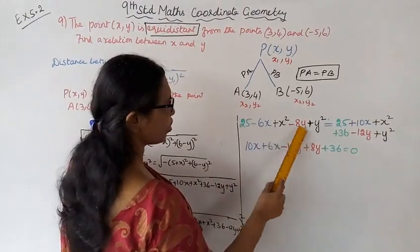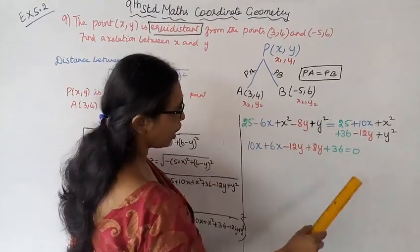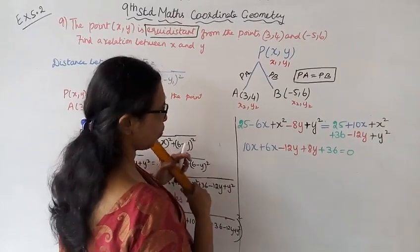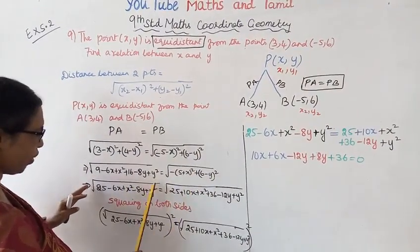Now constants are in green, x is blue, x² is black, y is red, y² is black. This step is squaring. Square root is removed.